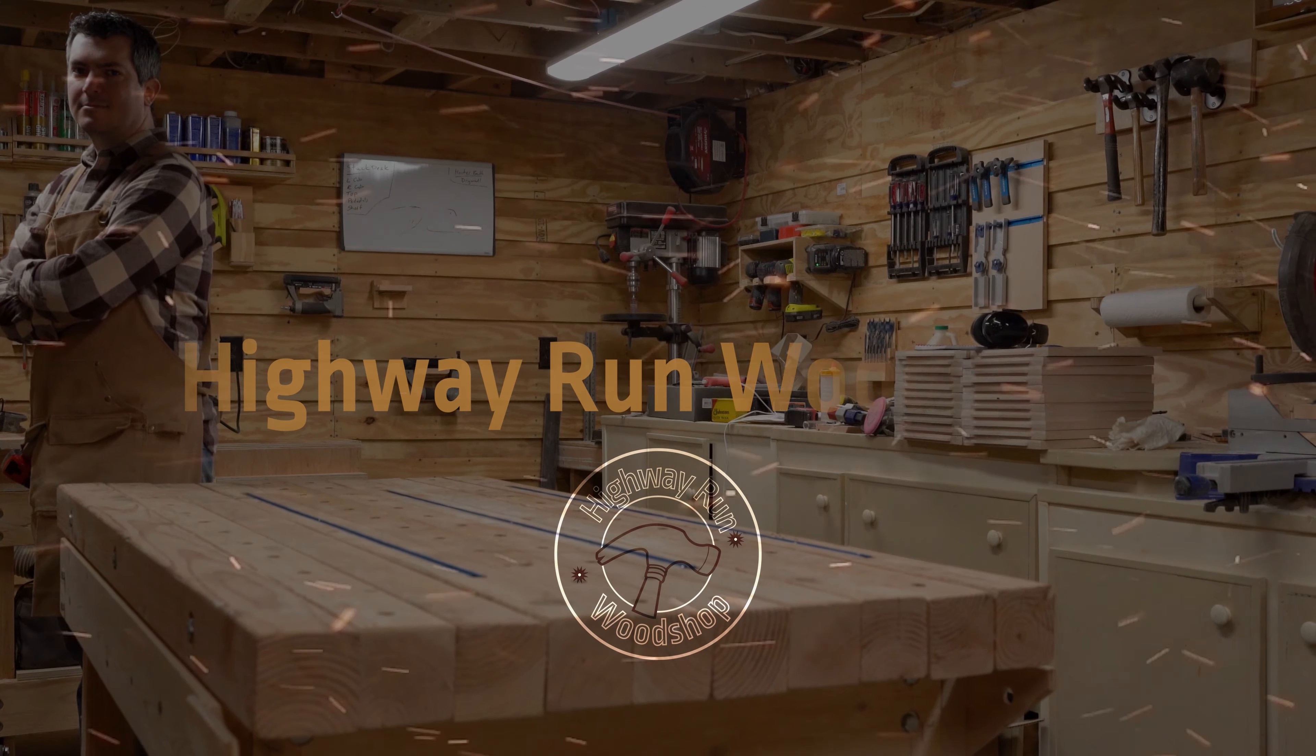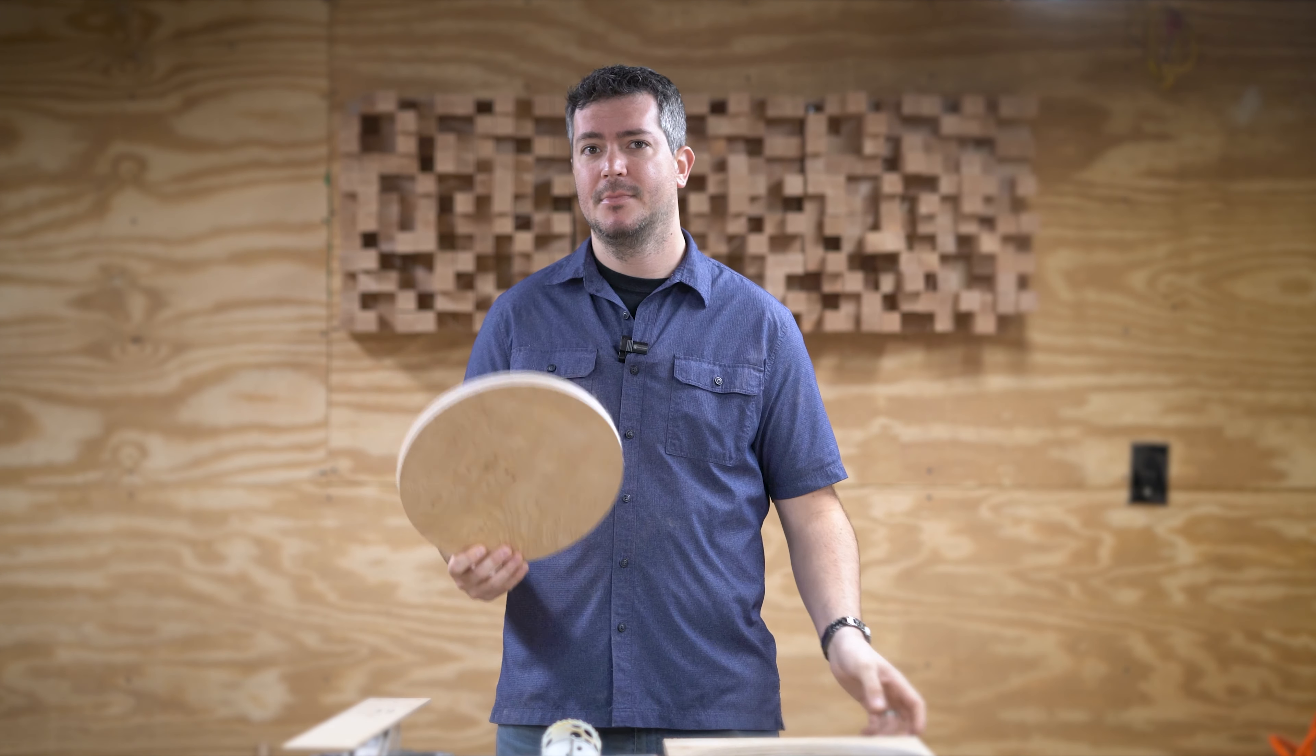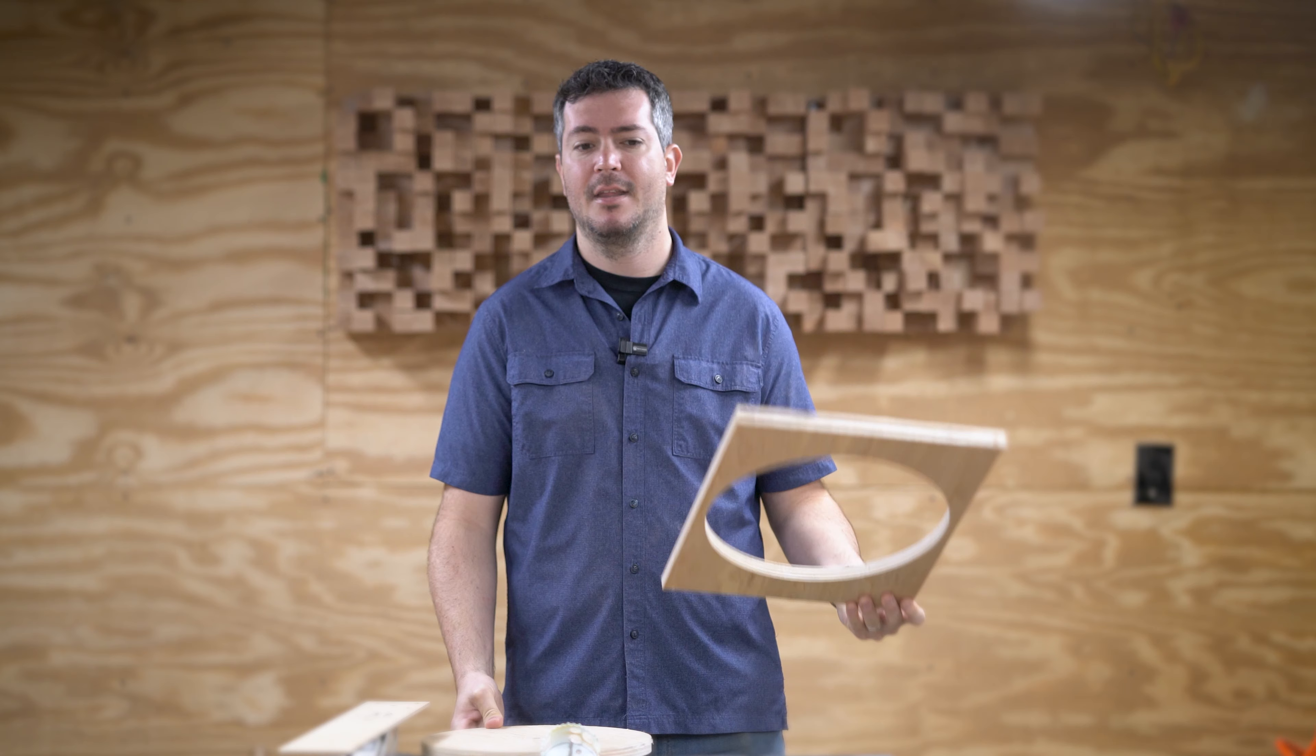At some point in your woodworking journey, you're going to need to cut a circle. That circle could be a disc like this one, or it could be a hole like this. Now if that disc or hole happens to be, say, six inches or less and it doesn't need to be all that accurate, then your best bet is probably just go to your local hardware store and get yourself a hole saw like this.